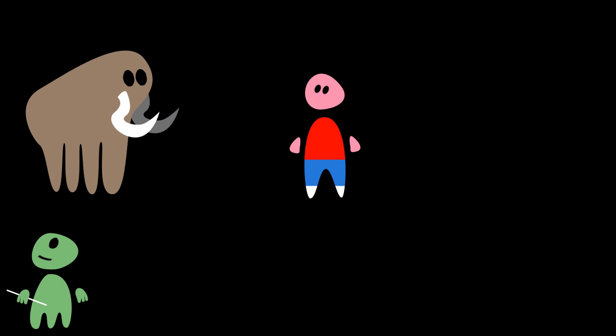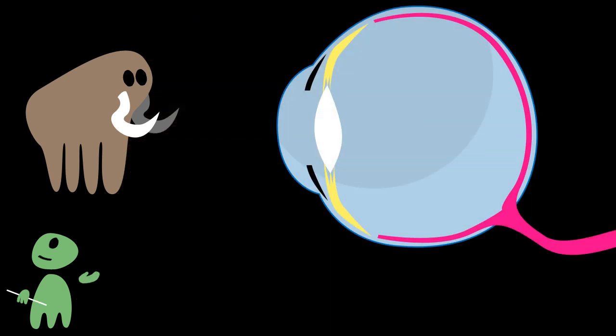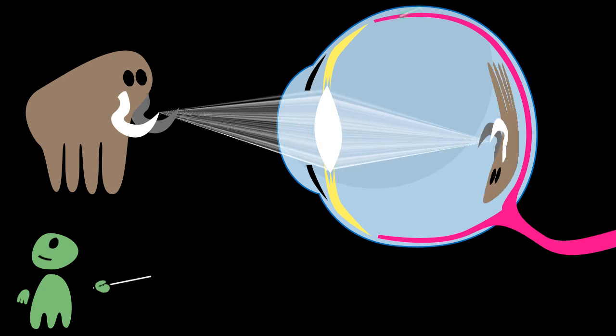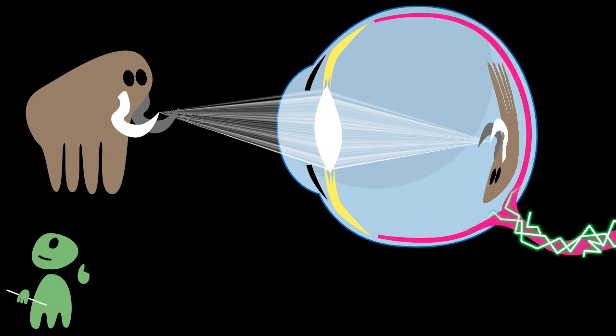The Earthlings perceive light with their eyes, a pair of globular organs in the head. Eyes are primitive bio-cameras. Light falls through a lens, is focused onto a photosensitive layer called retina, is transformed into electrical signals, and then? Well, that's when things become interesting.